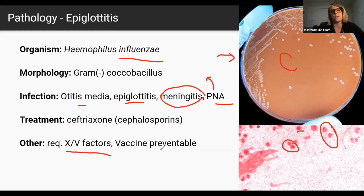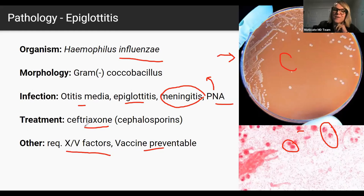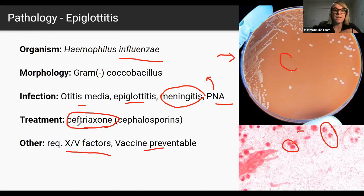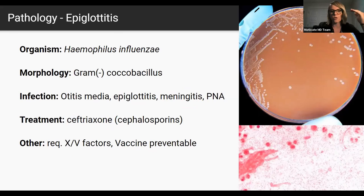This is also vaccine preventable. The Hib vaccine is given at two, four, and six months — though don't quote me on the exact schedule. We treat this with cephalosporins like ceftriaxone. This patient would definitely be admitted, likely to the ICU, and would probably be intubated in the OR — so that if needed there could be surgical intervention, since he's pretty sick. He'd probably get IV antibiotics as a result. That's our first case — fairly straightforward. We'll hit the next three cases very similarly so you get exposure to a lot of things.